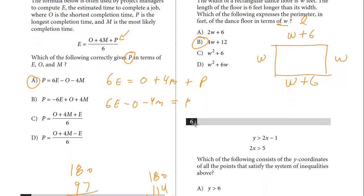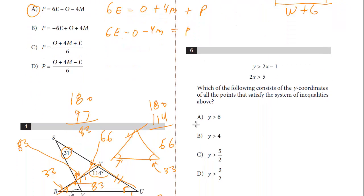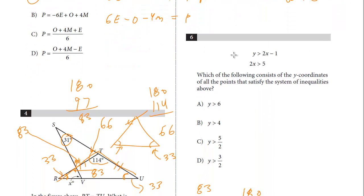Last question on this page, it is number 6. Which of the following consists of the Y coordinates of all points that satisfy the system of inequality? So we've got two different inequalities. We want to satisfy it. The way to do this problem is you see we have a 2X minus 1 here and just a 2X. You want to make these the same, and then we can compare both of them.